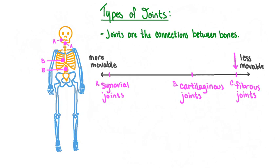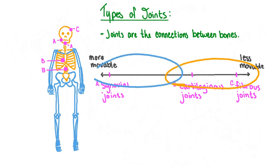Fibrous joints are immovable joints with very little flexibility, held together by tough fibers. Examples of fibrous joints found in the axial skeleton include the suture joints between the plate-like bones of the cranium. These stiff and tough joints stitch the bones of the skull together into one rigid protective structure that houses our delicate and important brain. The joints of the axial skeleton generally tend to be less movable than the joints found in the appendicular skeleton.